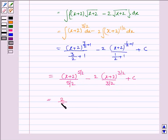Which can be again written as 2 by 5 into x plus 2 to the power 5 by 2 minus 4 by 3 into x plus 2 to the power 3 by 2 plus c.